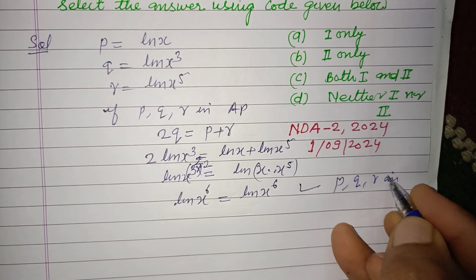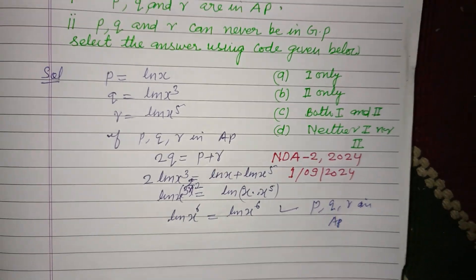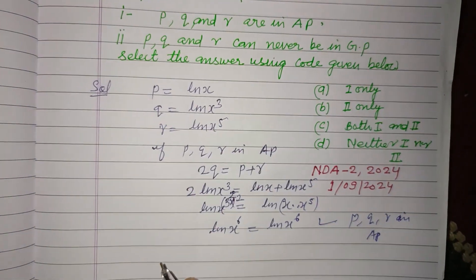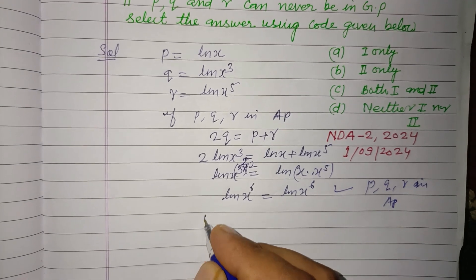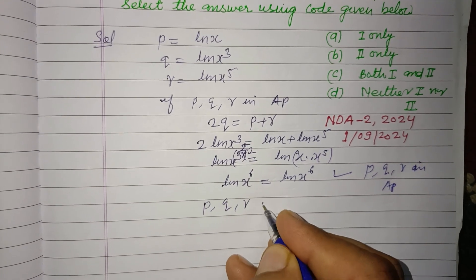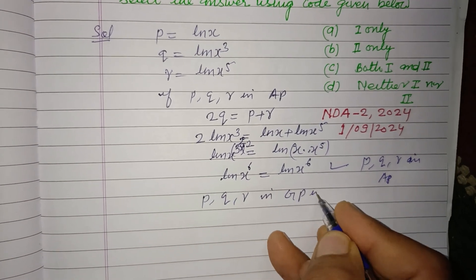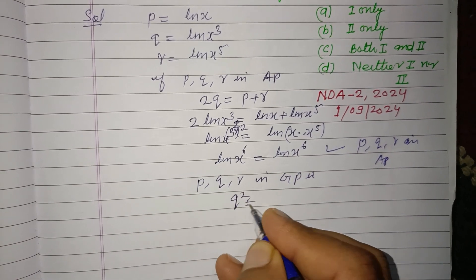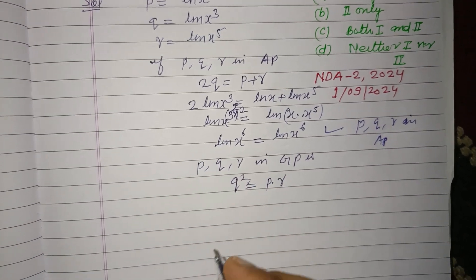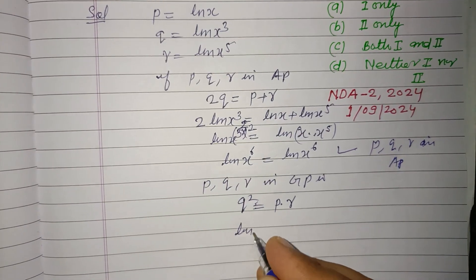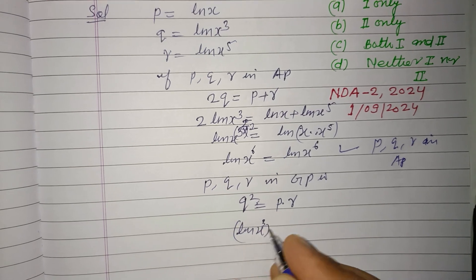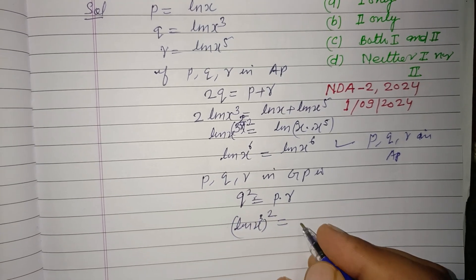Now we check whether they are in GP or not. For p, q, r in GP, q² should equal p·r. So q is ln(x²) whole squared equals p·r.